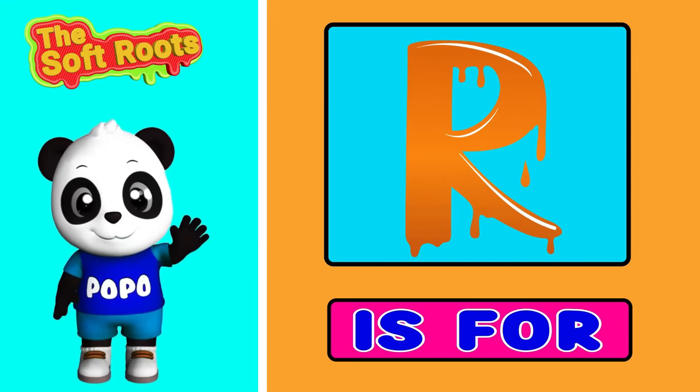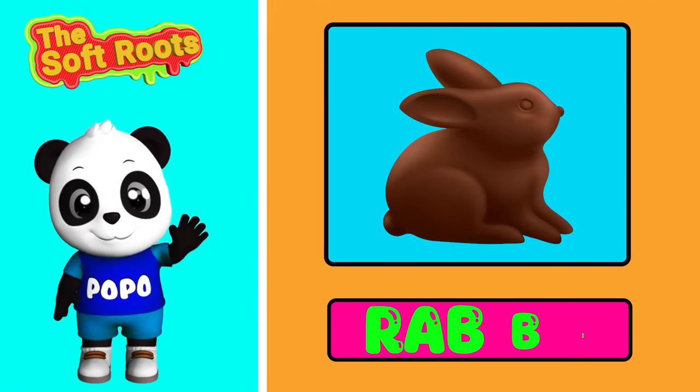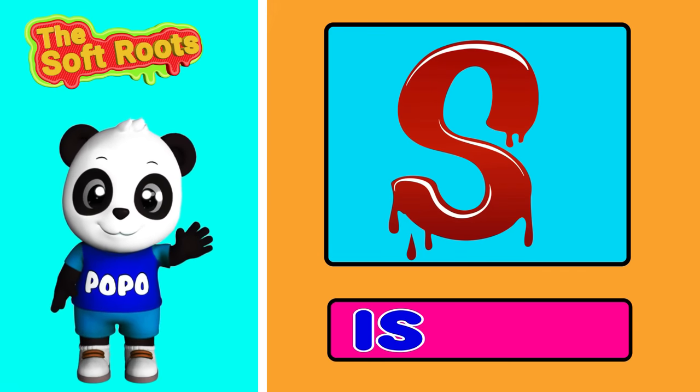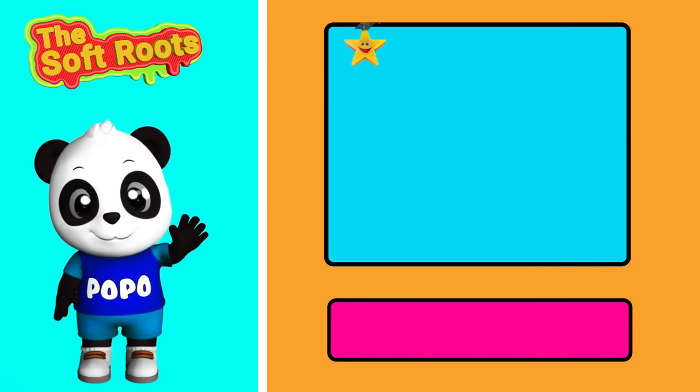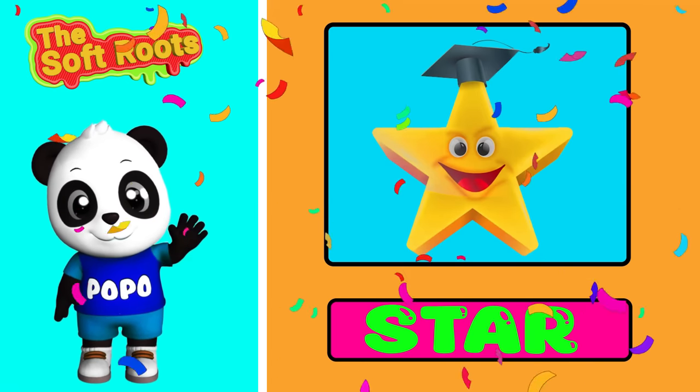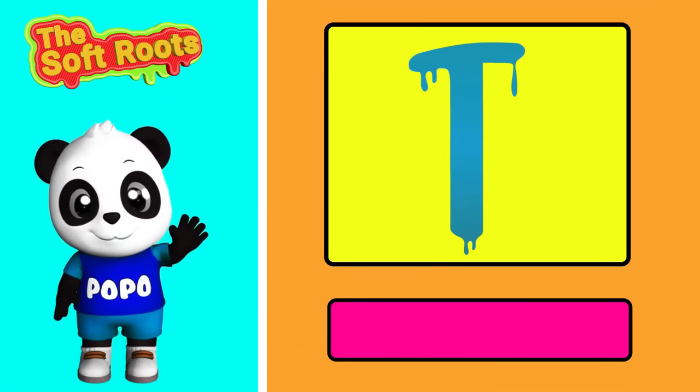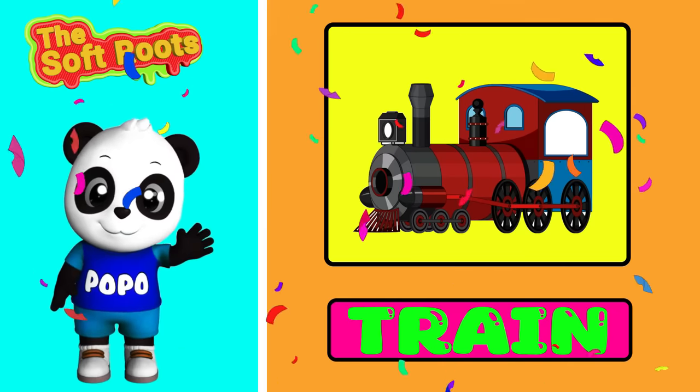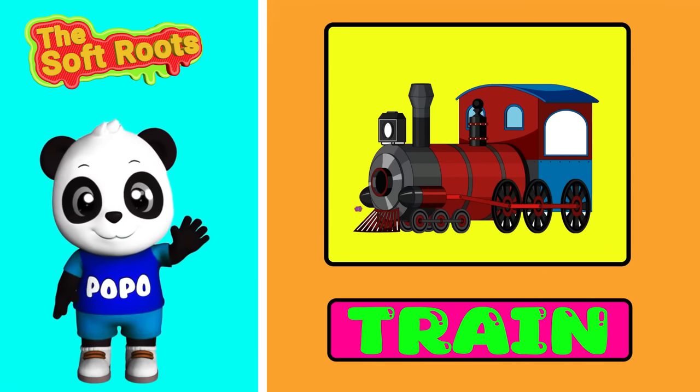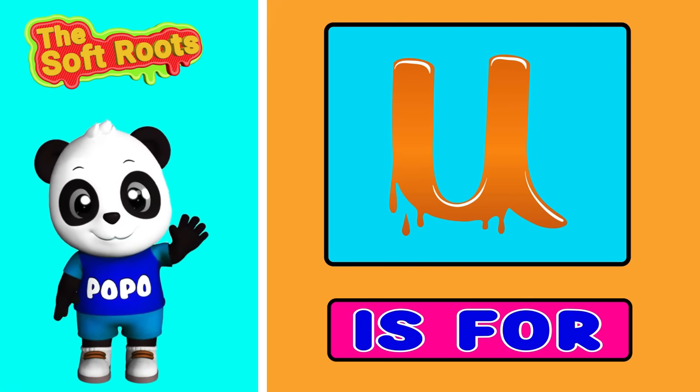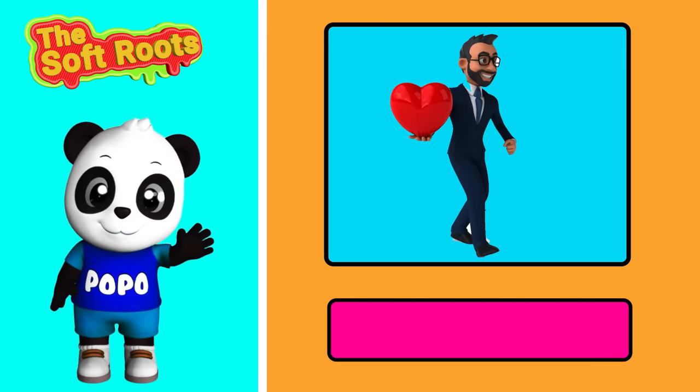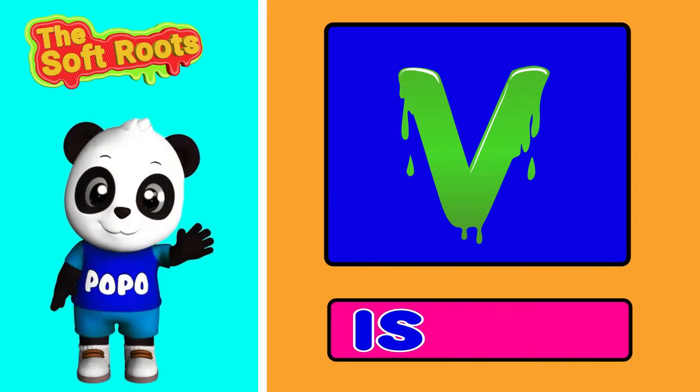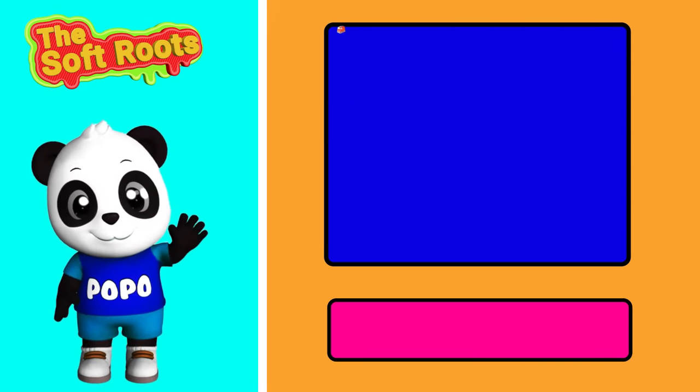R is for Rabbit. S is for Snake. T is for Tiger. U is for Unicorn.